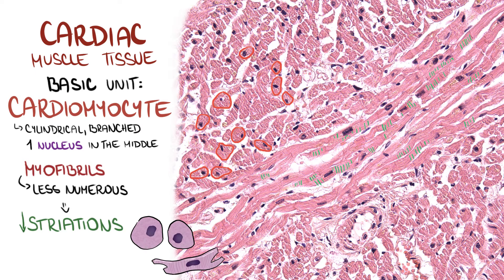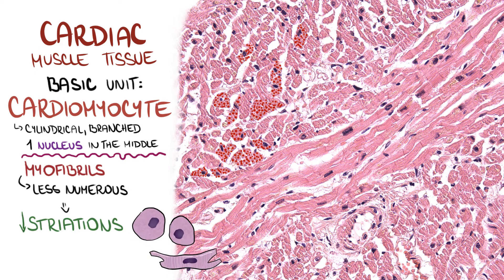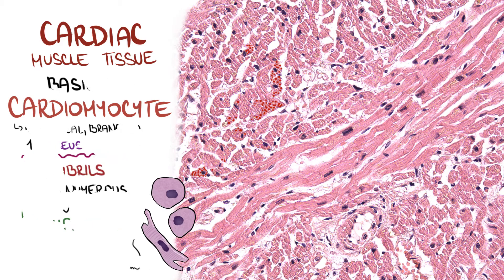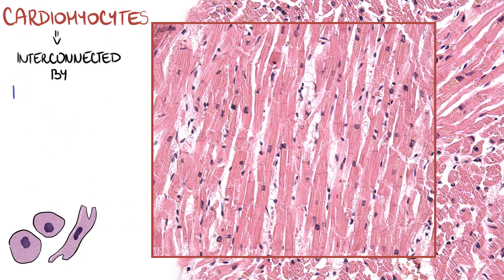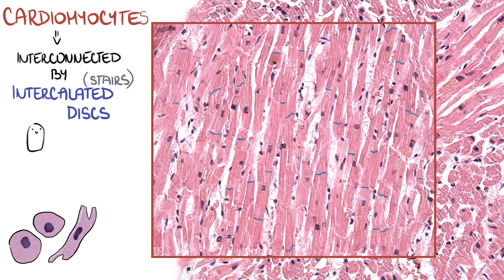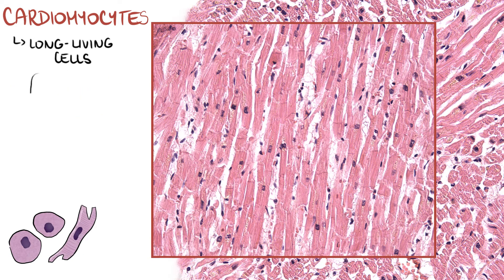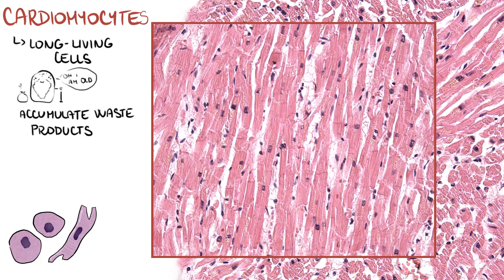The cross section of a cardiomyocyte is similar to that of skeletal muscle. We can appreciate small eosinophilic dots which are myofibrils, but the difference is that nuclei are in the center. Length of cardiomyocytes is around 100 micrometers. Individual cardiomyocytes are interconnected by intercalated discs. They resemble stairs and are responsible for cellular communication and synchronization of muscle contraction. Cardiomyocytes are long-living cells, which is why they accumulate waste products in their tertiary lysosomes within their cytoplasm around the nucleus. This structure can be seen as a brown pigment called lipofuscin.